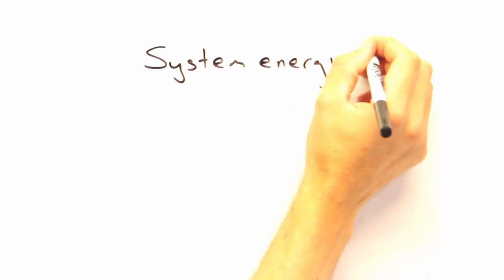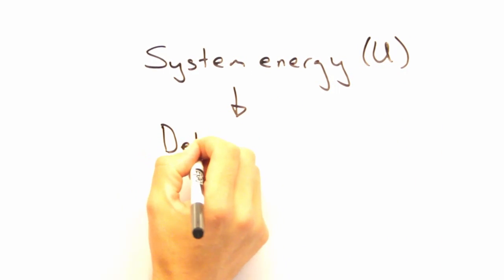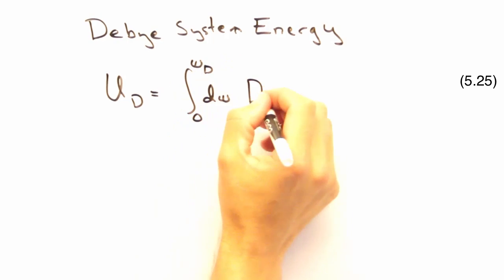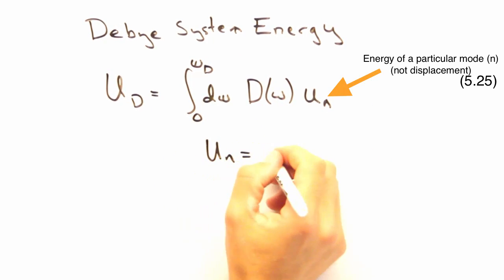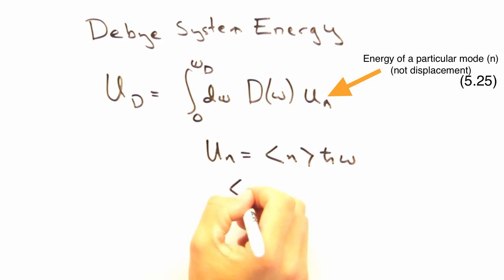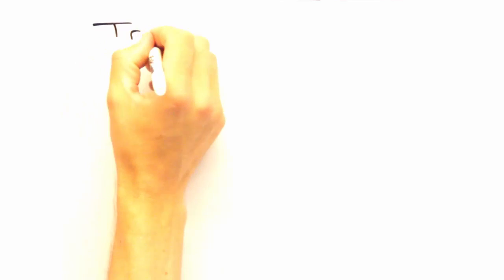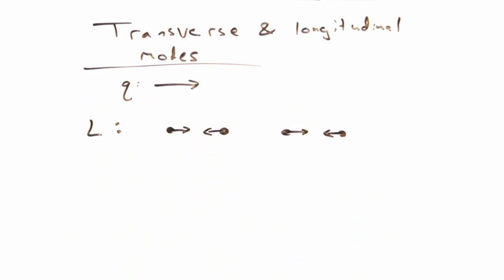No problem. Before we tackle heat capacity, we need to determine the energy of our system as a function of temperature. Let's start by writing the energy of our system as an integral over our density of states times the energy of a particular mode, determined by h bar omega times the Planck distribution. We'll also multiply the energy by a factor of three because we have two transverse modes and one longitudinal mode for three dimensions.